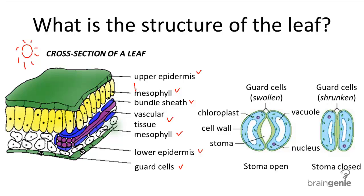Chloroplasts are mainly found in the palisade mesophyll and the spongy mesophyll. The palisade cells are more columnar shaped and more tightly packed, and they're closer to the sun, so they're well exposed to the light, whereas the spongy mesophyll are loosely packed with a lot of open air space in between, and this open air space gives the cells an increased surface area available for water and gas diffusion.